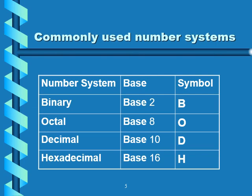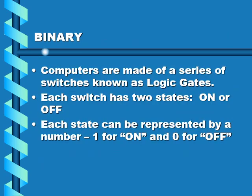A number system is defined by the set of values each digit can assume. We have different bases: binary, octal, decimal, and hexadecimal. We are going to focus on binary and decimal, and converting between decimal and binary.